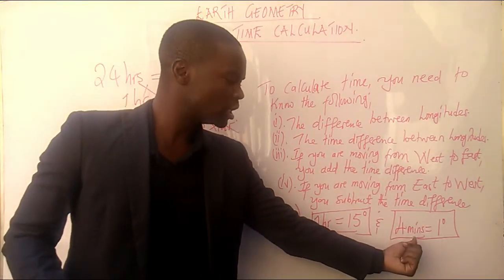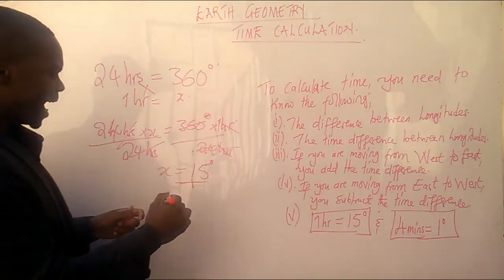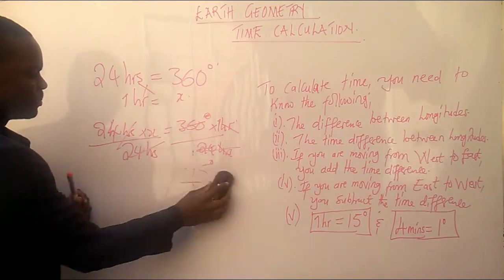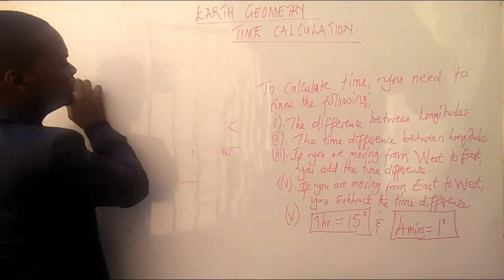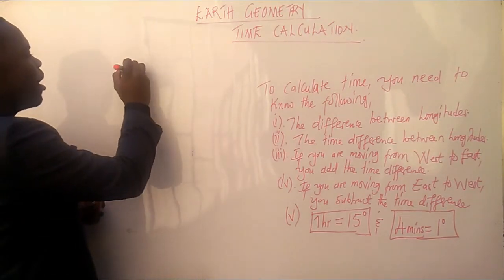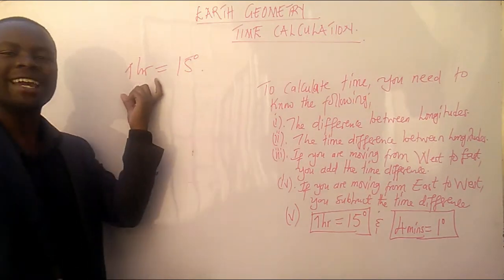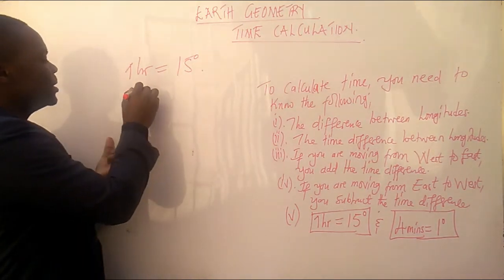Now, where have we gotten 4 minutes to represent 1 degree? Very simple. Since we have said that 1 hour, let me erase this part. Okay. Since we have said that 1 hour is equal to 15 degrees, remember that this 1 hour in minutes is what? It's 60 minutes.